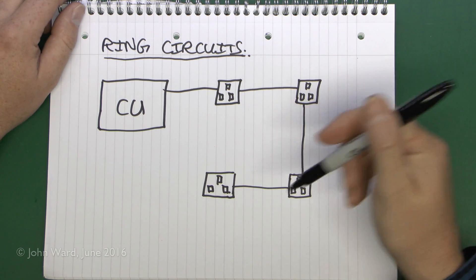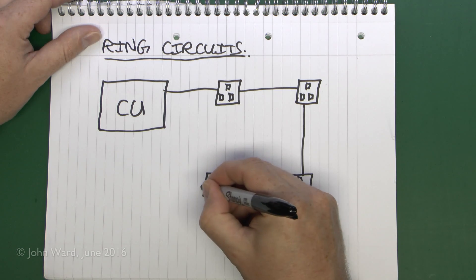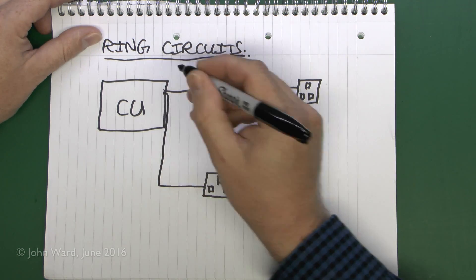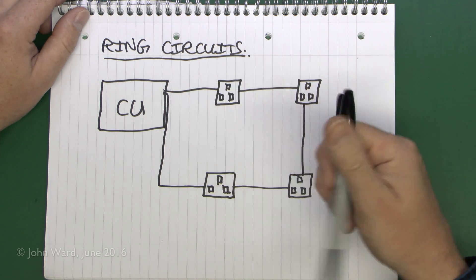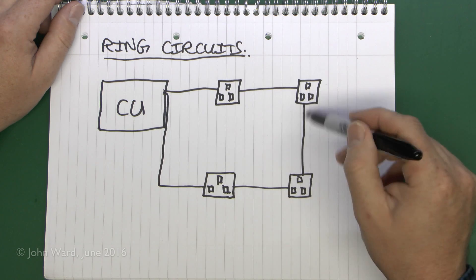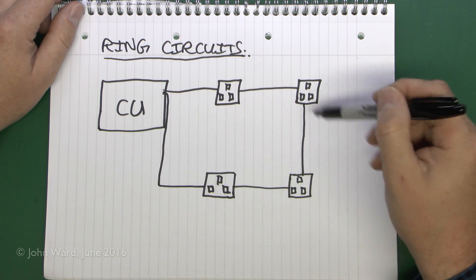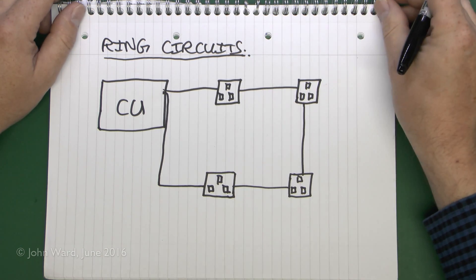The big difference with the ring circuit as you may have guessed is that when you get to the end of it, well there is no end because the cable here comes out of here and actually goes back to the consumer unit. Hence the ring circuit as it's a ring of cabling. This is a really fundamental point in that there has to be a complete and continuous ring of cable starting here and going around and returning back to the very same place that it started from.